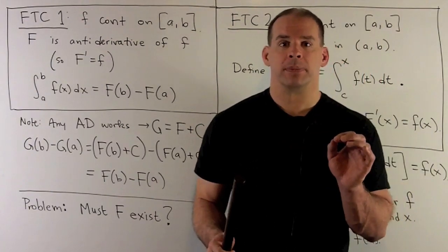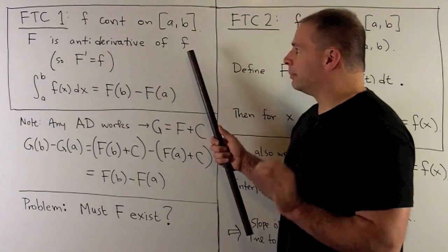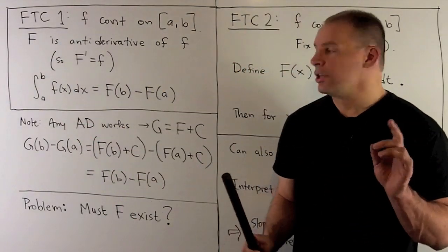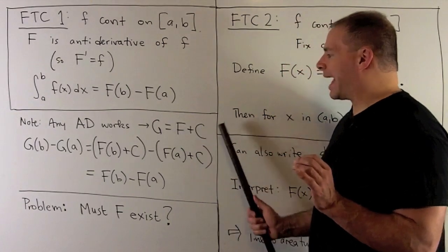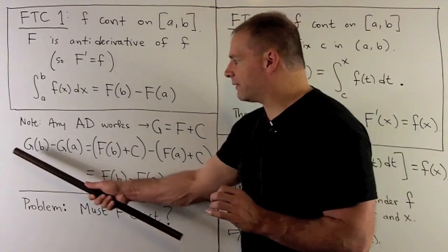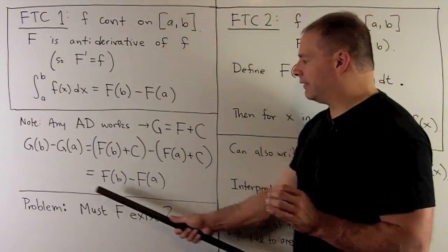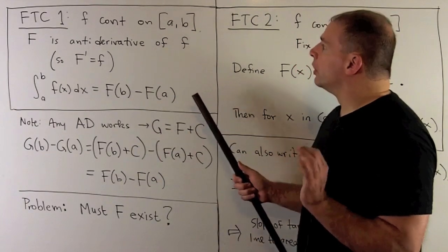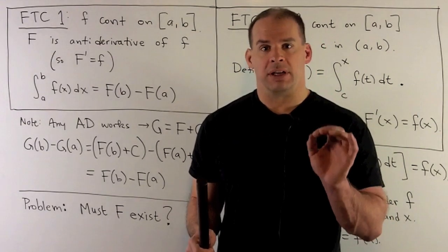Note: we can use any antiderivative in our theorem, assuming at least one exists. If we have at least one, we can get any other antiderivative by adding a constant. When we take the difference, that constant is going to go away, leaving us with the original difference. So it won't matter what antiderivative you use — just use the one that's most convenient.